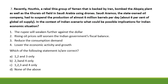Recently, the Houthis — a rebel Shia group of Yemen backed by Iran — bombed the Abqaiq plant and the Khurais oil field in Saudi Arabia using drones. Saudi Aramco, the state-owned oil company, had to suspend production of almost 6 million barrels per day.